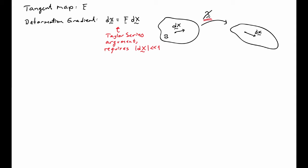This Taylor series argument requires a truncation step, and that requires that the norm of d capital X be much less than 1. But it's a very useful physical interpretation of the deformation gradient.